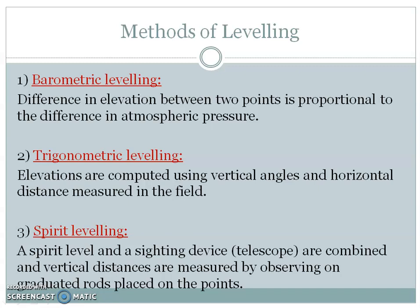The last method is spirit leveling, which is the method of direct leveling. It is a branch of leveling in which vertical distances with respect to a horizontal line are used to determine the relative difference in elevation between two adjacent points. The horizontal line of sight at any point is readily established by means of a spirit level. A spirit level and a sighting device — a telescope — are combined, and vertical distances are measured by observing graduated rods placed on the points.